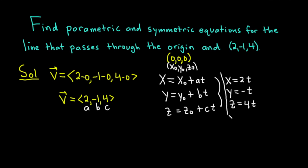These are the parametric equations for the line. To find the symmetric equations, we can simply solve these equations for t. If you do that, you would get x minus x0, and then you would divide by a, like this. And that's your t.